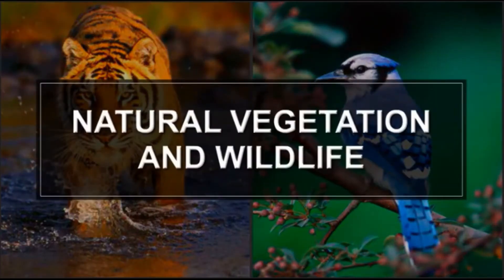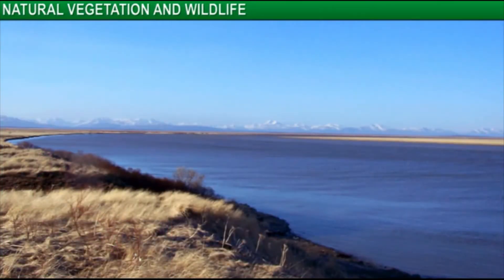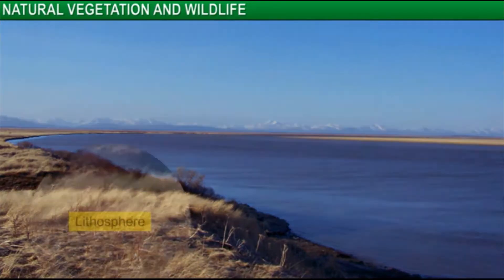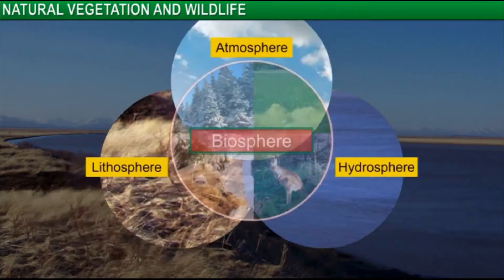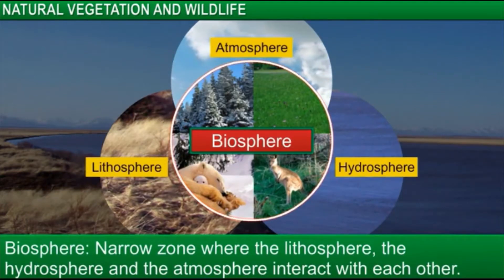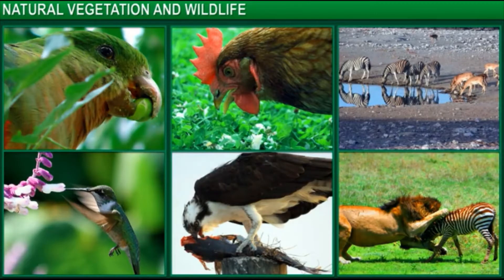You will learn about natural vegetation and wildlife. Natural vegetation and wildlife are the plants and animals that survive naturally in a specific region. Natural vegetation and wildlife are part of the biosphere. The biosphere is the narrow zone where the lithosphere, the hydrosphere, and the atmosphere interact with each other. In the biosphere, living beings are related to each other as well as dependent on each other for survival.